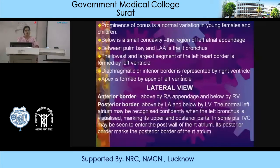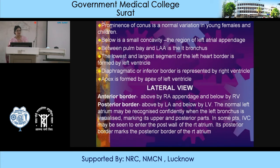Prominence of the pulmonary conus is a normal variation in young females and children. Below this is a small concavity formed by the left atrial appendage. Between the pulmonary bay and the left atrial appendage is the left bronchus, which helps differentiate the upper boundary of the left atrial appendage. The lowest and largest segment of the left heart border is formed by the left ventricle. The diaphragmatic or inferior border is represented by the right ventricle, and the apex is formed by the apex of the left ventricle.